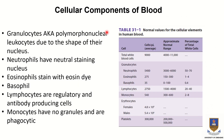The cellular components include white blood cells, red blood cells, and platelets. White blood cells are classified according to the shape of the nucleus and the presence of granules. Granulocytes contain granules and include neutrophils, eosinophils, and basophils, while monocytes do not contain granules.